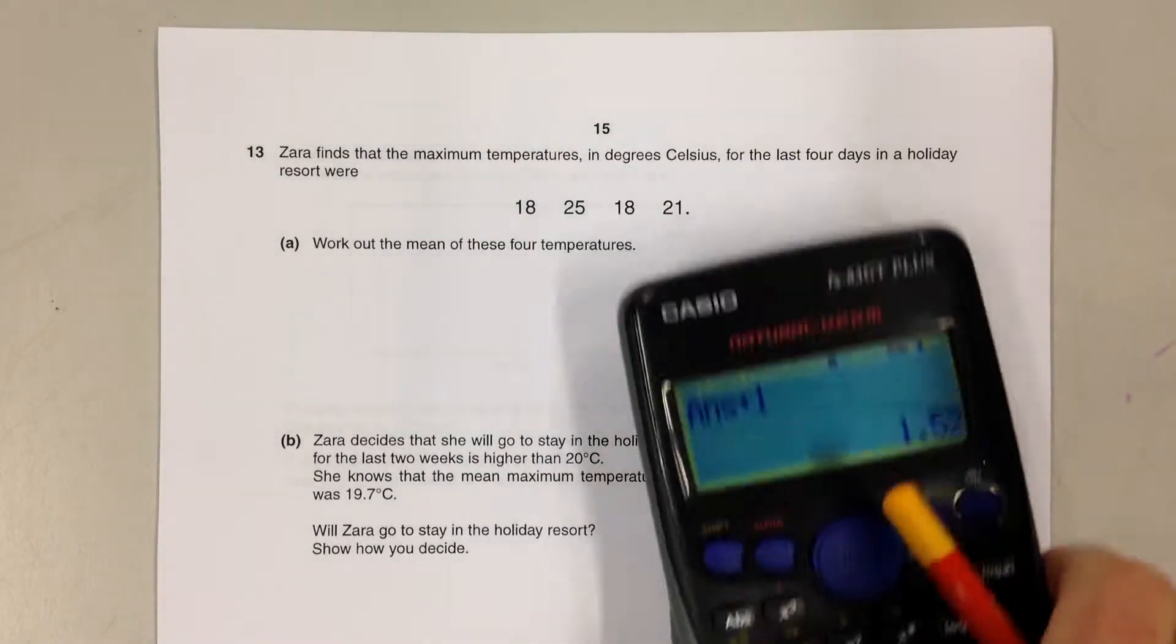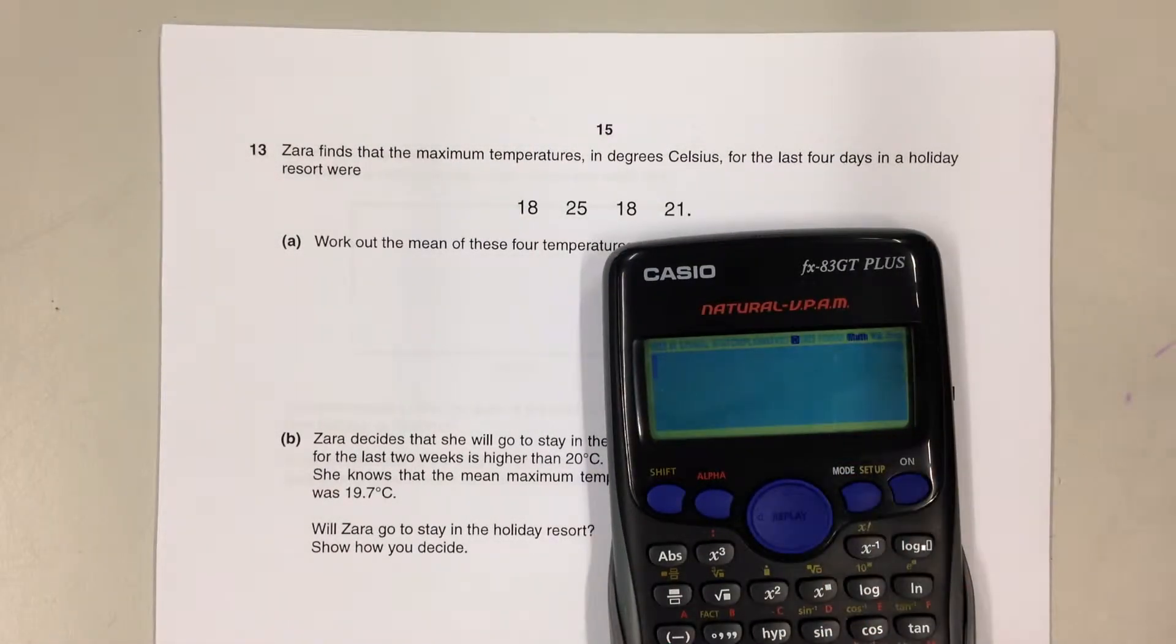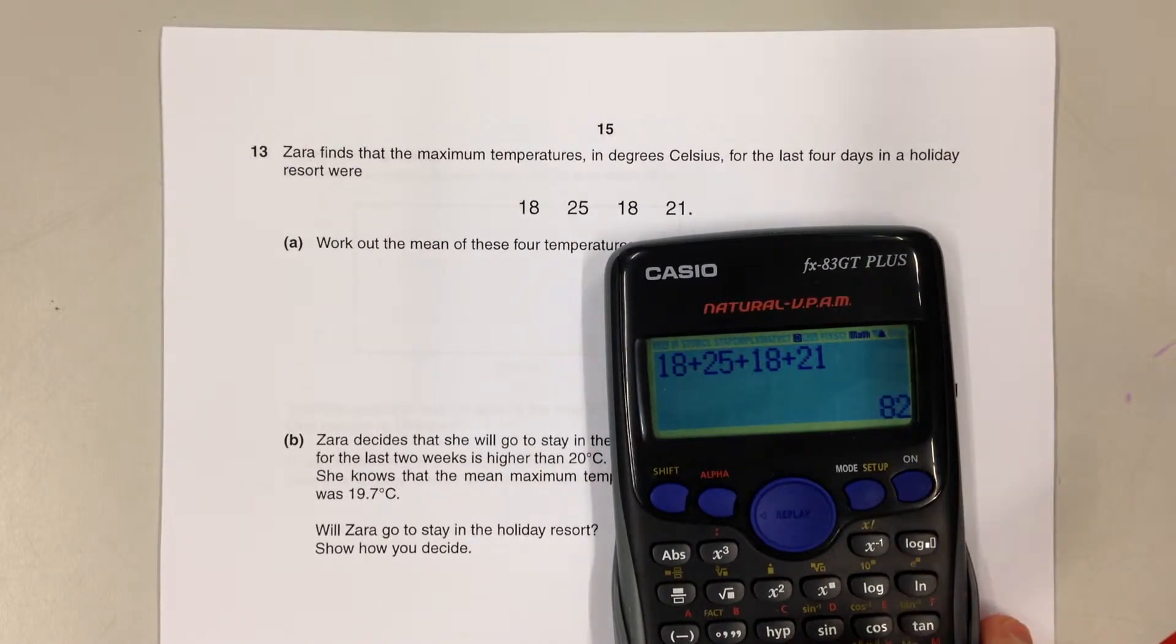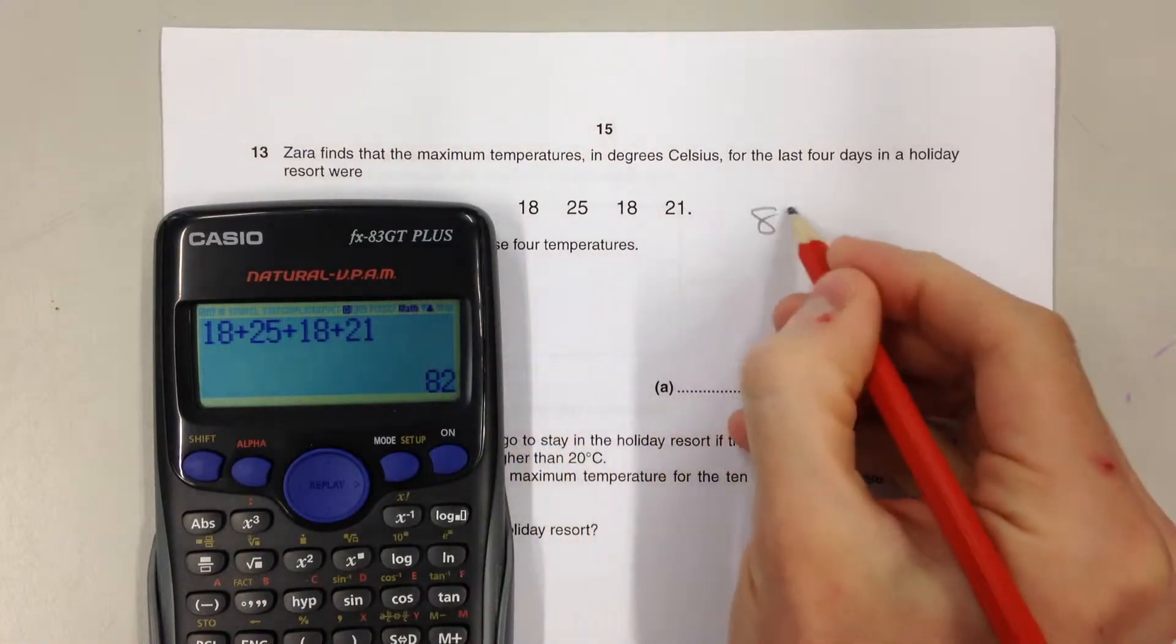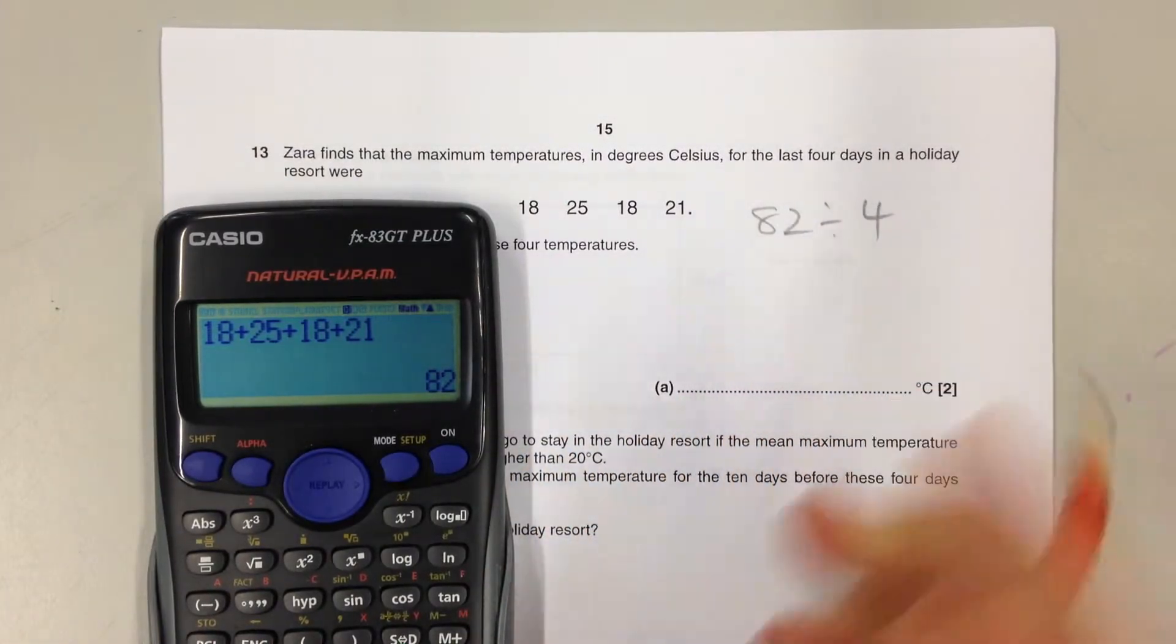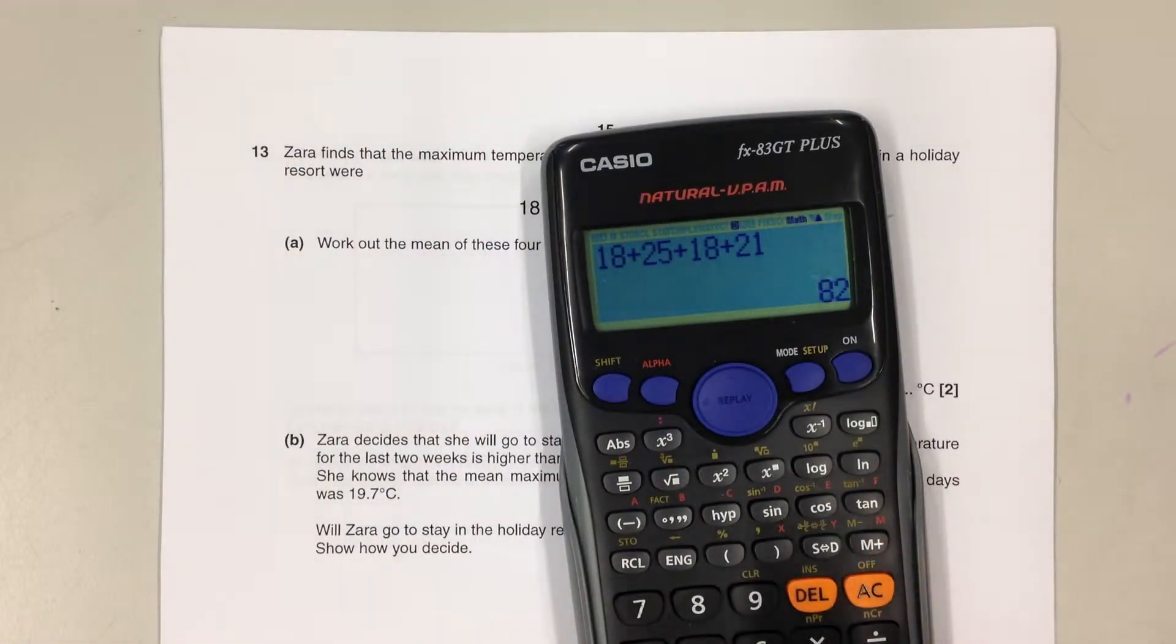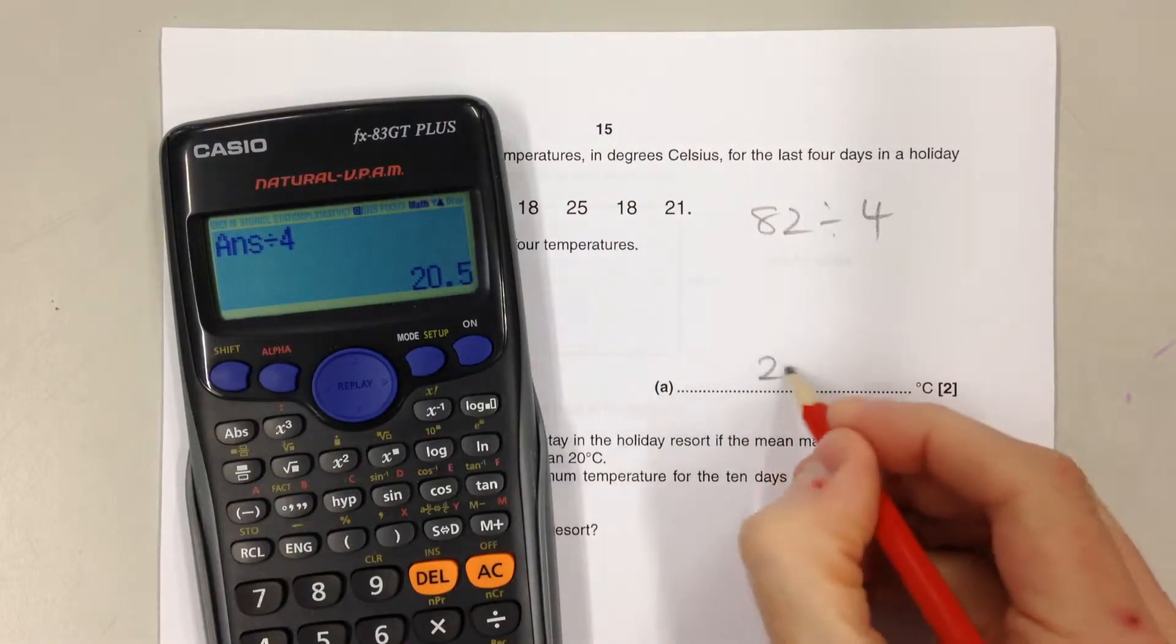You need to remember the difference between the mean, the median, and the mode. The mean is the average where we add the values together and then divide by how many values we've got, which is 20.5.